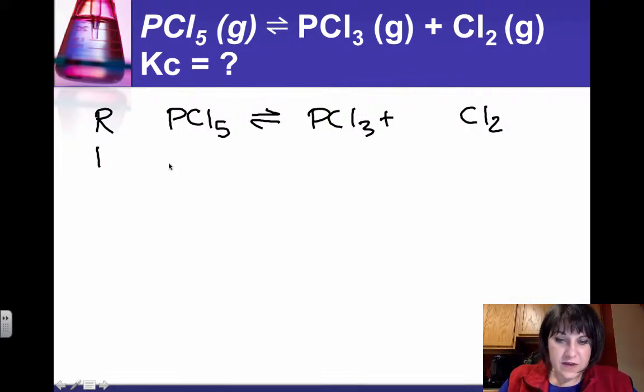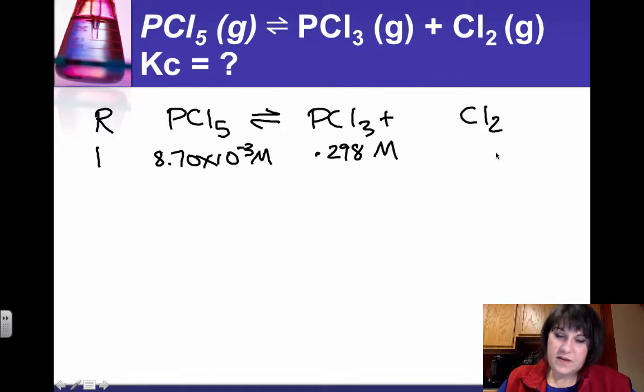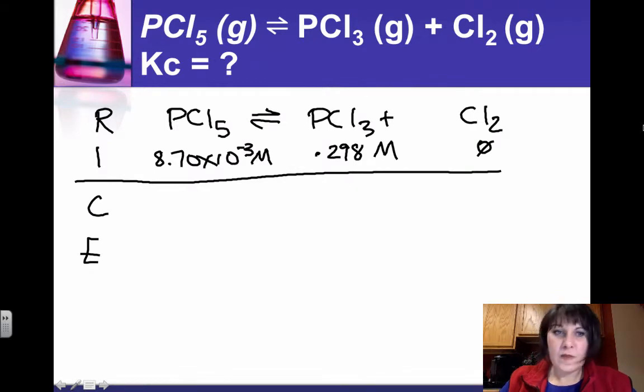say in our one liter flask we have 0.298 moles in one liter of PCl3. And PCl5 is 8.70 times 10 to the minus 3 moles in that one liter, so that's our molar concentration, and it doesn't say that there's any chlorine gas, so we're not going to put any in.